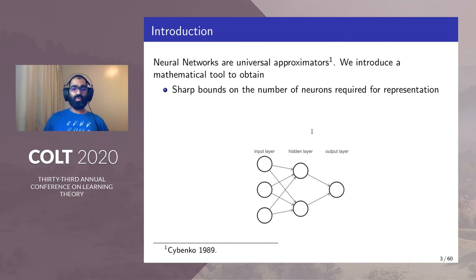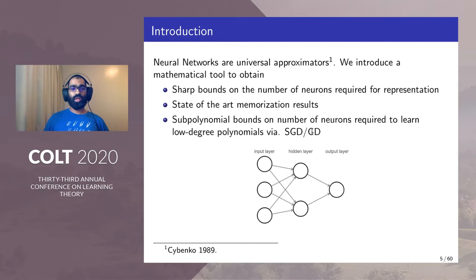We achieved state-of-the-art memorization results, and subpolynomial bounds on the number of neurons required to learn low-degree polynomials via stochastic gradient descent or gradient descent.